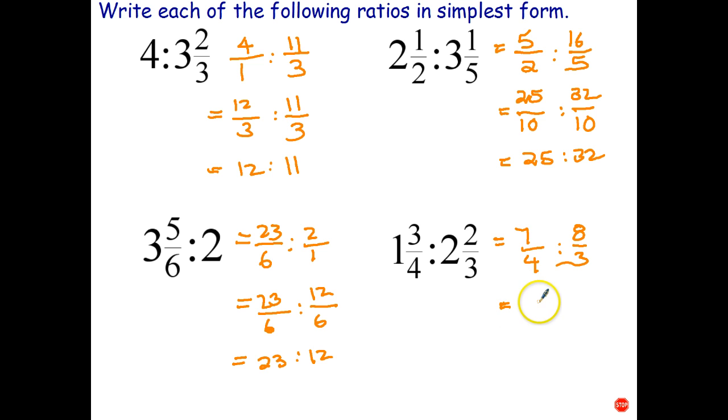Okay, we now need to get a common denominator. Well, the common denominator of 4 and 3 is 12. 4 times 3 is 12, 7 times 3 is 21. 3 times 4 is 12, 8 times 4 is 32.